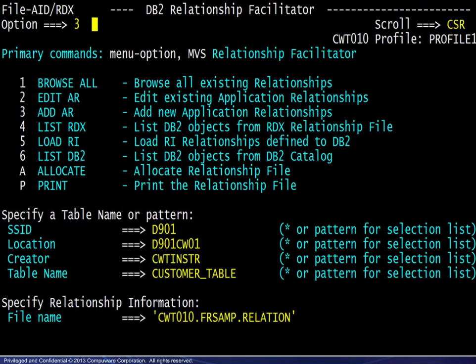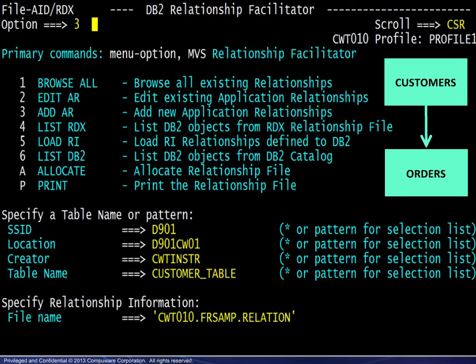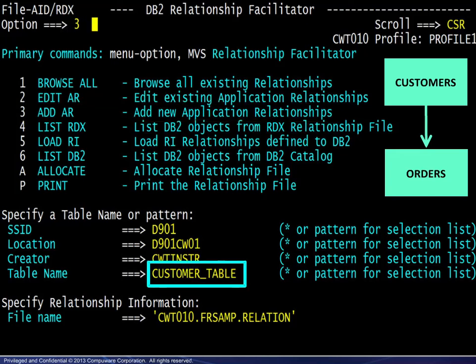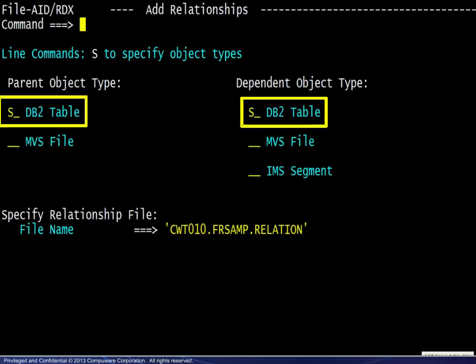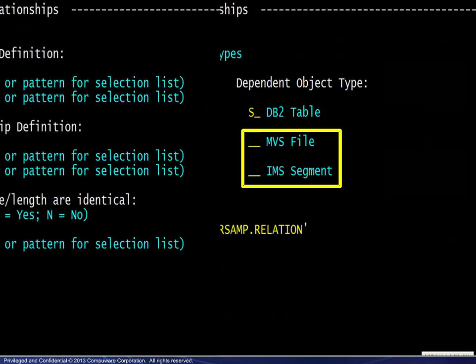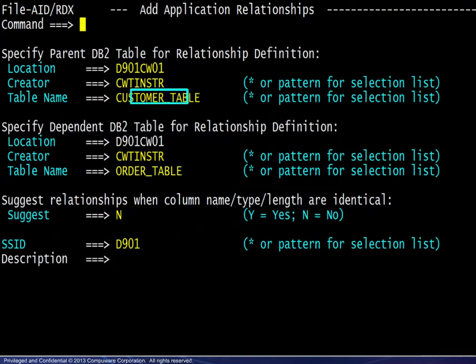For the application relationship, the graphic reminds us that the customer table is the parent and the order table is the dependent. We choose option 3 to add an application relationship to the file, then specify the customer table. On the next panel, we choose DB2 tables for both the parent and dependent object types. The other object types are covered in separate modules. On the next panel, the parent table is specified and the dependent table is specified.